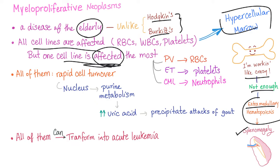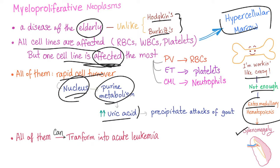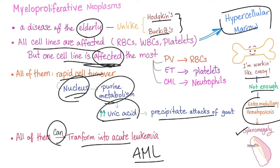In cases of primary myelofibrosis, splenomegaly is kind of rare. Rapid cell turnover means the nucleus is being destroyed and rebuilt repeatedly, increasing purine metabolism and uric acid, which can precipitate attacks of gout. All myeloproliferative disorders can transform into acute leukemia, especially AML. They can also transform into each other — PV can lead to myelofibrosis, and essential thrombocytosis can lead to PV and then myelofibrosis.